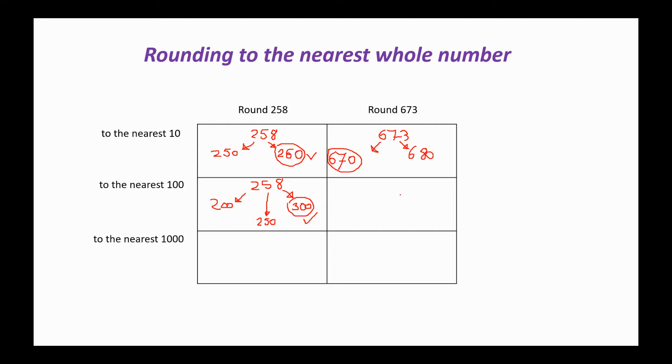Moving on to 673 then, to the nearest 100. The 100 that comes before is 600, and the 100 that comes afterwards is 700. And it's a little bit easier to see this time that 700 is closer to 673 than 600 is, so 700 is our answer.